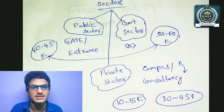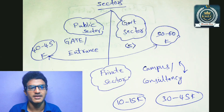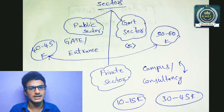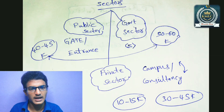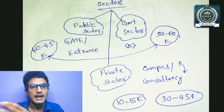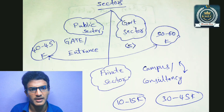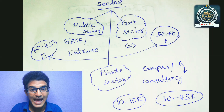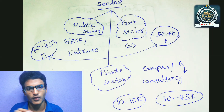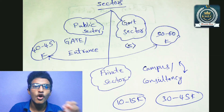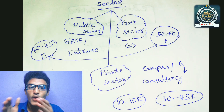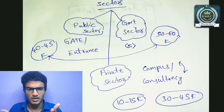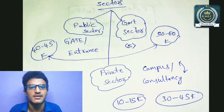Sector-wise, there are three sectors: the public sector, government sector, and private sector. In the government sector, salaries range from around 45k to 50k. In the private sector, you may start with a lower salary but can work up to 60k with experience. The two sectors have different pay structures.